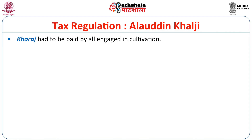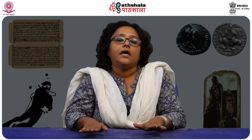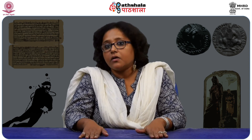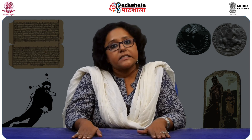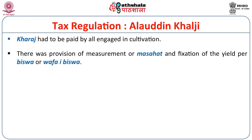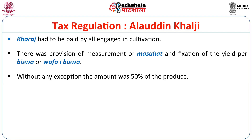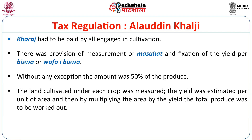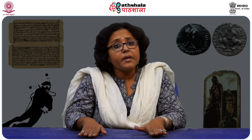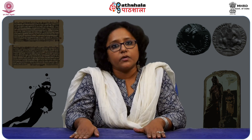Kharaz had to be paid by all engaged in cultivation. Alauddin Khalji also introduced these taxes on the rural elite, who were not in the habit of paying taxes. There was a provision of measurement — Mahasad — and fixation of yield per Biswa, known as Wafa-e-Biswa. Without exception, the amount was 50% of the produce. The land under each crop was measured, yield estimated per unit of area, and the total produce calculated. This system later came to be called Khan Khut, which worked up to the early Mughal period.